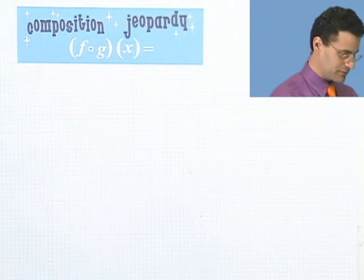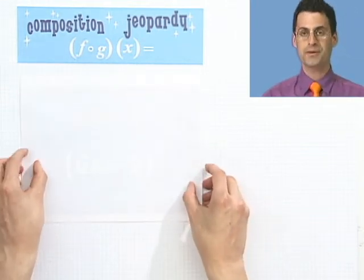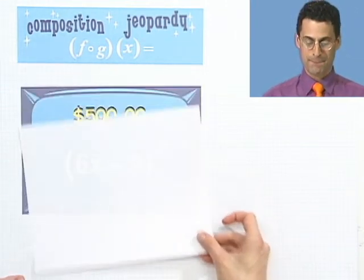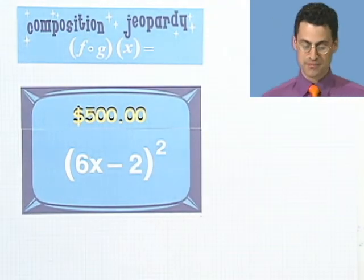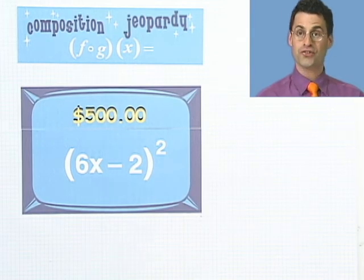Okay, I think we're ready to begin with our first Composition Jeopardy. For $500, the quantity 6x minus 2 all squared. Good luck.